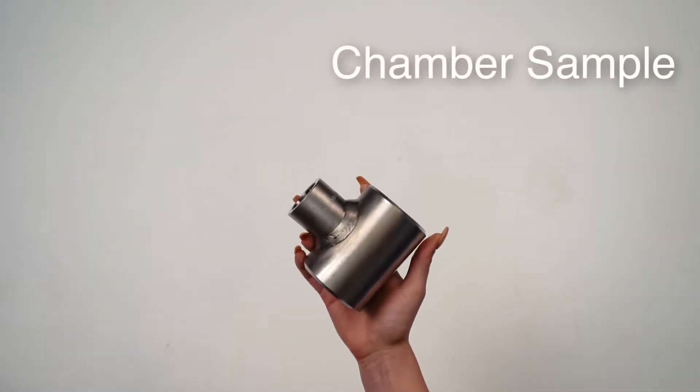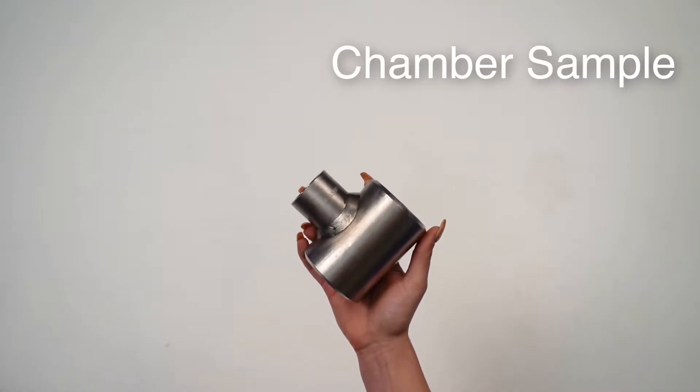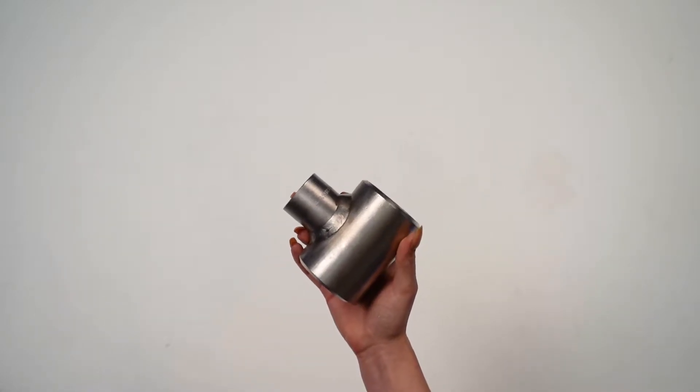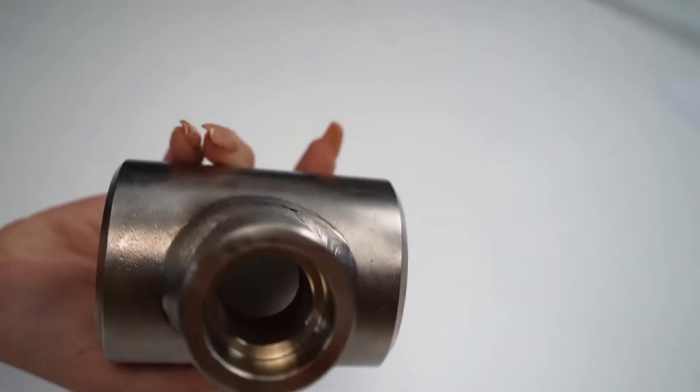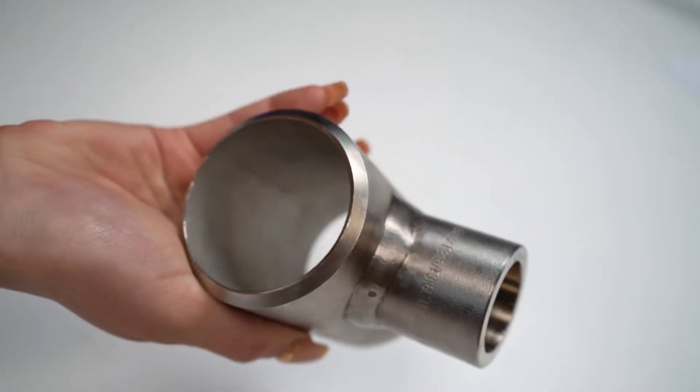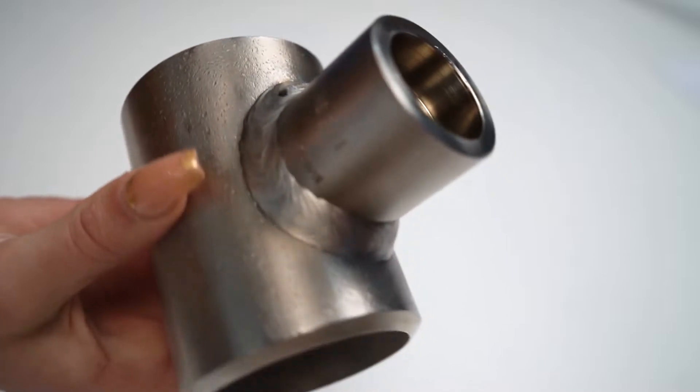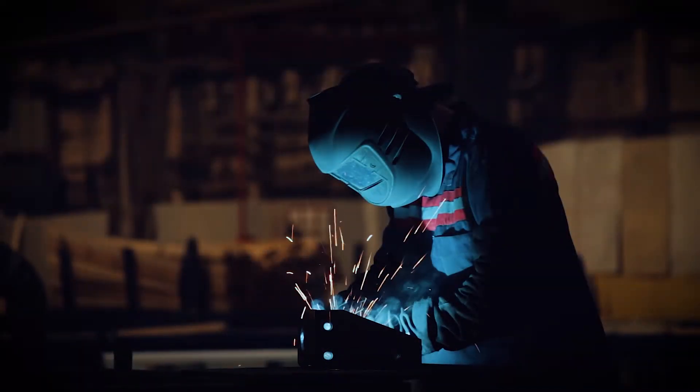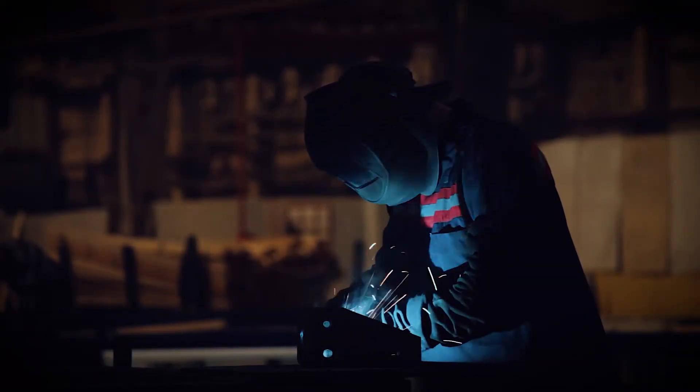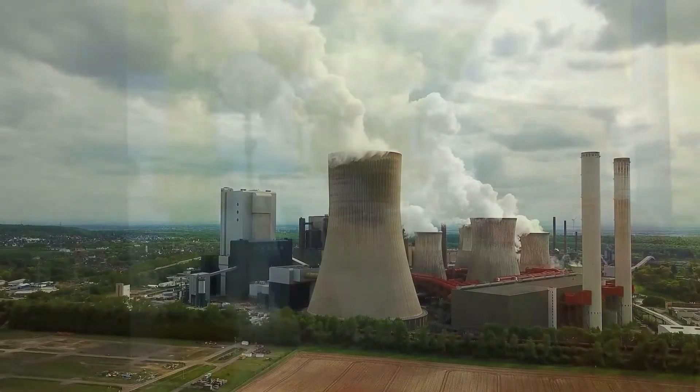First up, this is a sample of the chamber with a socket weld branch connection. This component shows the high quality of material and manufacturing that goes into all SOR products. We manufacture all of our chambers to ASME B311, B313 standards, and SOR has over 30 years of experience manufacturing chambers for oil and gas, power production, and other industrial markets.